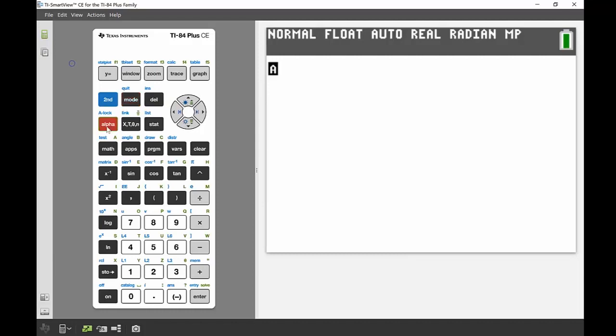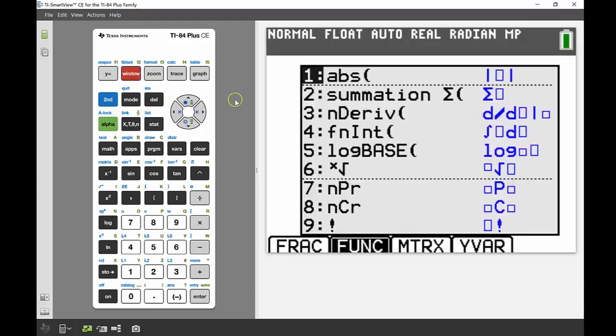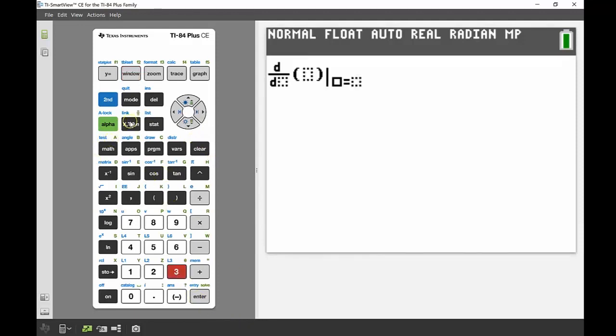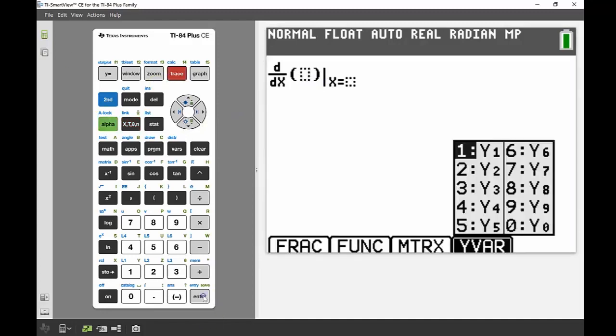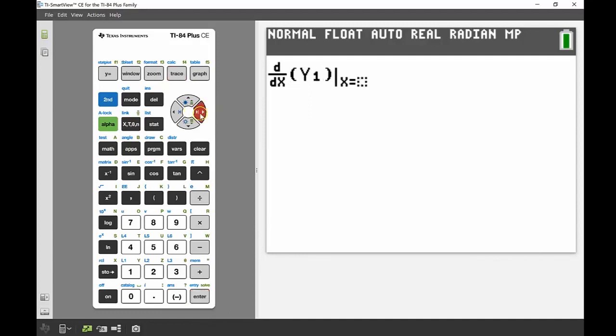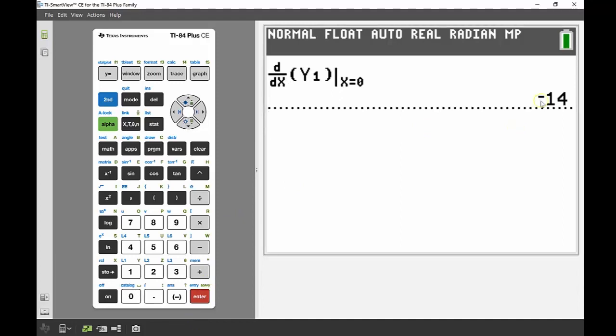To do that I'm going to use alpha and then my quick keys to get my derivative template. That's number three, derivative. My variable is x. Now I could write out my whole equation into the brackets here but I already stored that under y1. So I can use my quick keys again and use alpha f4 to bring up my y1 equation, and I'm solving for where x is equal to zero because I'm looking at my initial condition. Enter and I can see my acceleration is equal to negative 14.